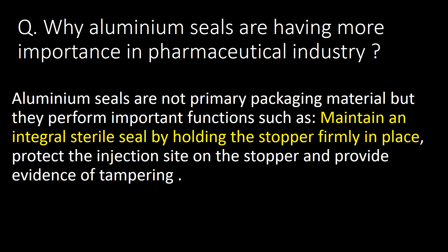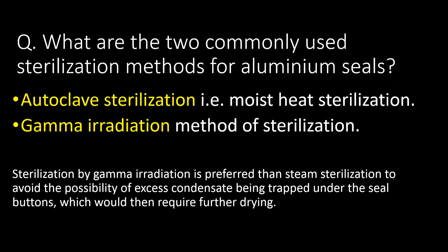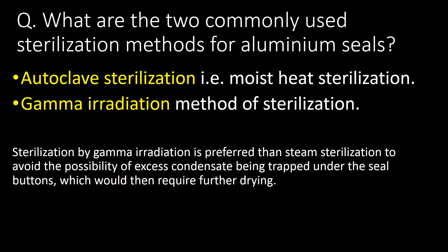Why do aluminum seals have more importance in the pharmaceutical industry? Although aluminum seals are not primary packaging materials, they perform important functions such as maintaining an integral sterile seal by holding the stopper firmly in place, protecting the injection site on the stopper, and providing evidence of tampering.